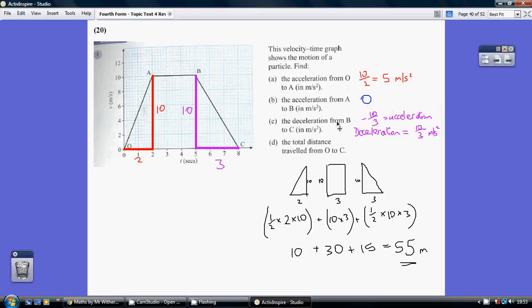But as they ask for the deceleration, we always just give that as the numerical value. So that's 10 over 3, or 3 and a third.